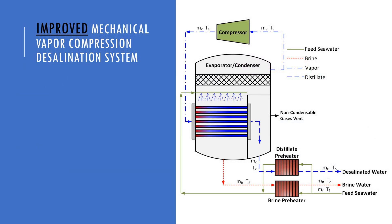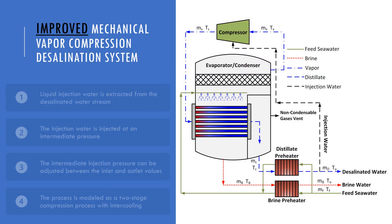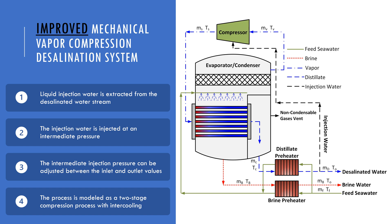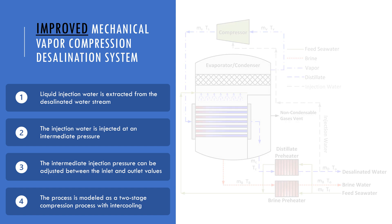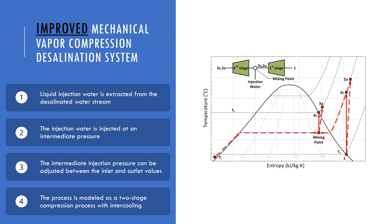In our improved system, a water injection line is extracted from the desalinated water stream to be injected into the compressor at an intermediate pressure. The intermediate injection pressure can be adjusted between the inlet and outlet values. The injection process is modeled as a two-stage compression process with intercooling at an intermediate pressure. However, if the injection is done at the inlet pressure, it means we have a single-stage compression with a two-phase inlet vapor. For other injection pressure values, the process is a two-stage compression with intercooling.